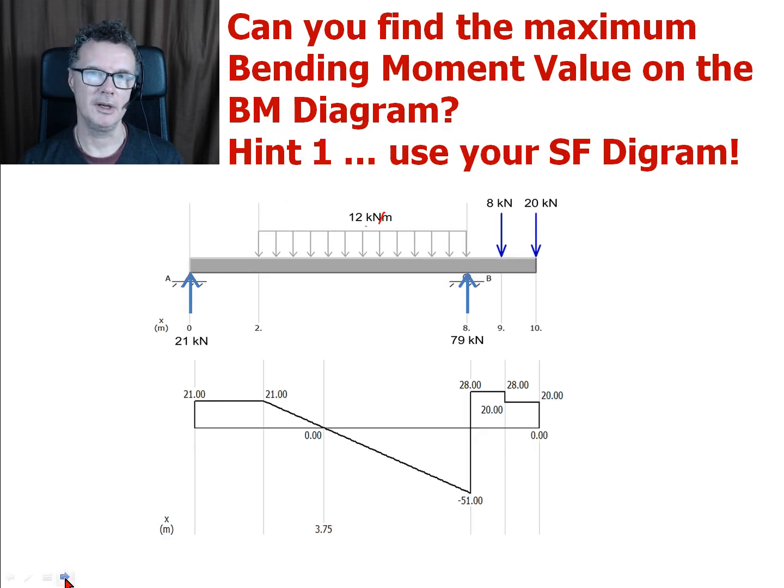The first hint is to go back and use your shear force diagram. Your shear force diagram shows you this value going straight up because of the reaction and now it's starting to drop because of the UDL and notice that it will cut at a point when x equals 3.75 meters.